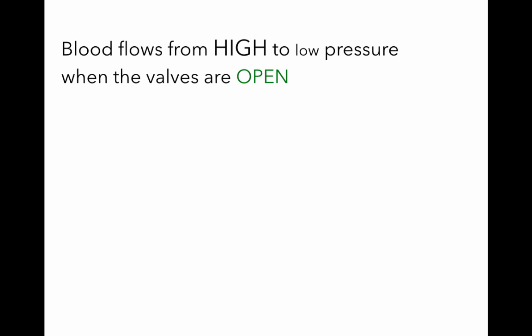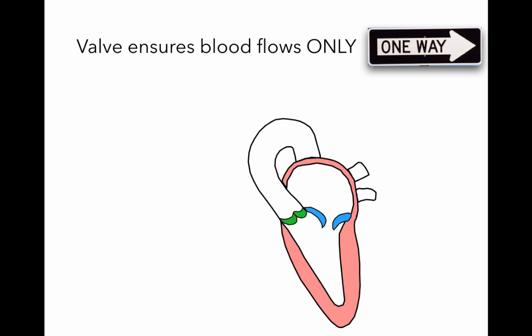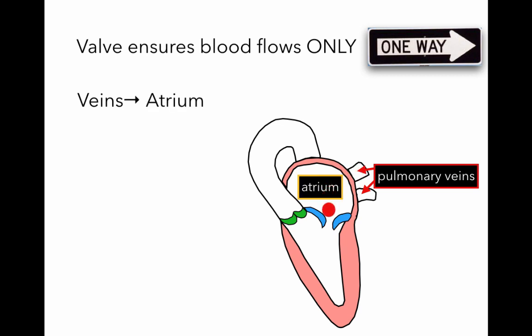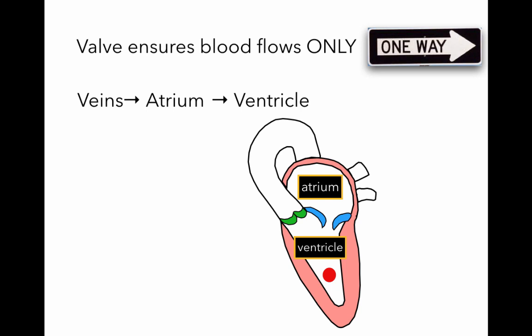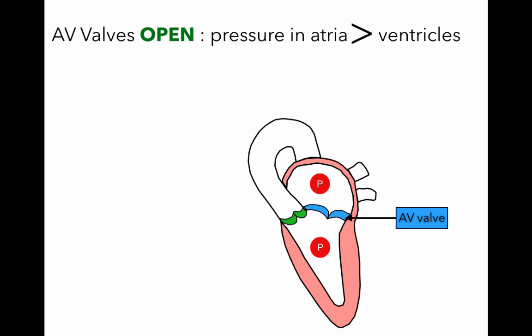Blood flows from areas of high pressure to areas of low pressure, and this happens when the valves are open. Valves are crucial in ensuring blood flows in only one direction — from the veins into the atrium, then into the ventricle, and then out into the artery. What opens the AV valves is when pressure in the atria becomes greater than pressure in the ventricle. As blood accumulates, the atrial ventricular valves open and blood flows into the ventricle.